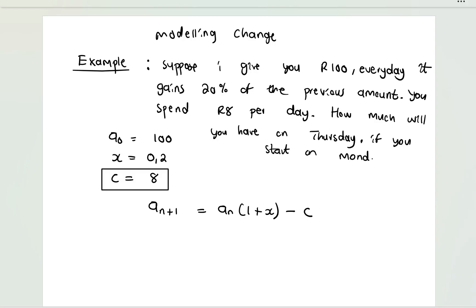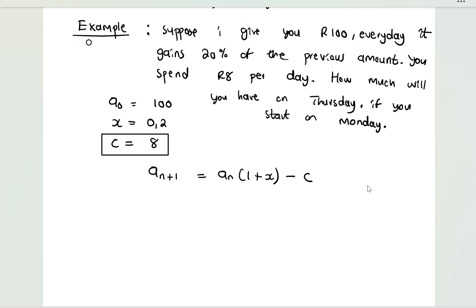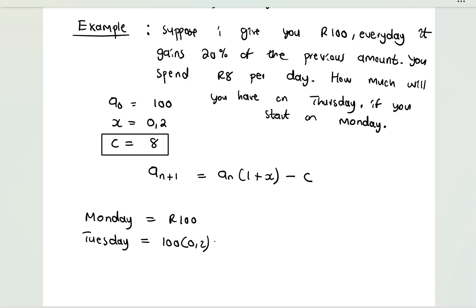Let's try to do this manually first, then we'll develop a model. On Monday the initial value is 100. On Tuesday, I take the previous amount of 100, multiply by 20 percent and subtract 8 rand. That's 100 × 0.2 + 100 − 8, giving you 112 on Tuesday.